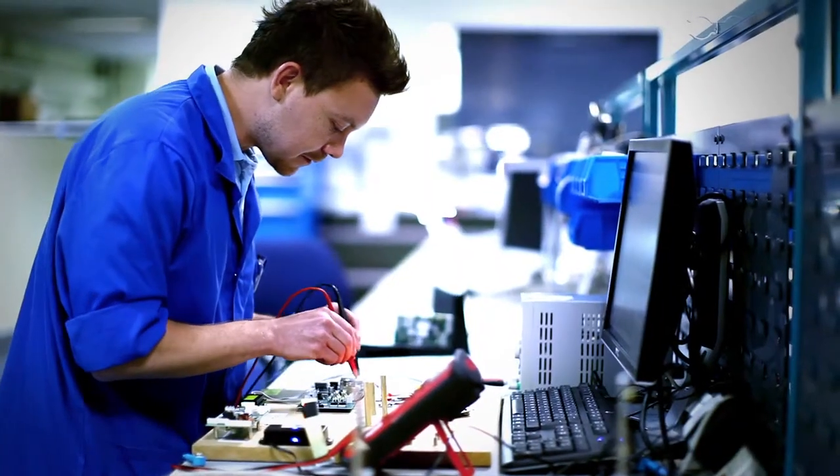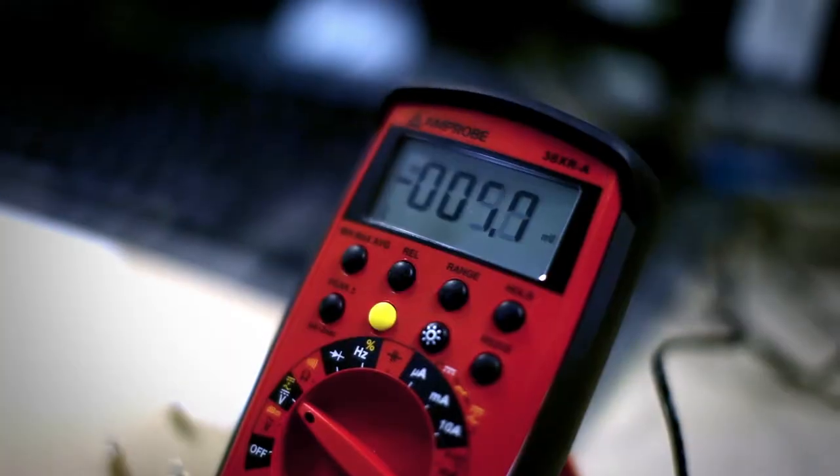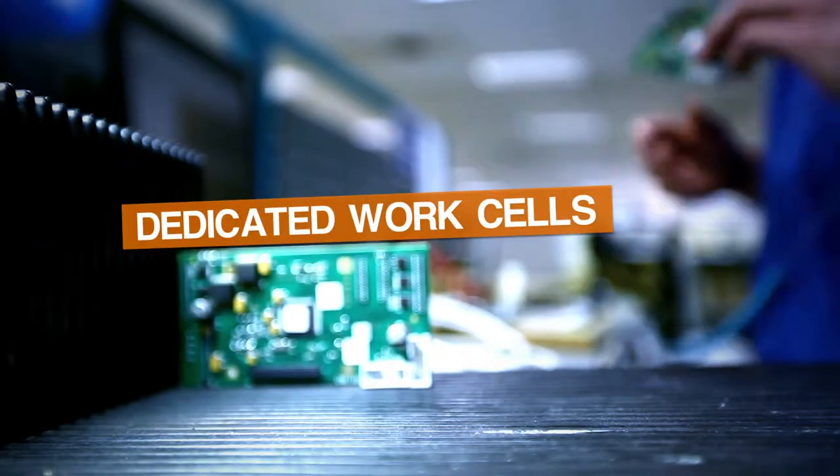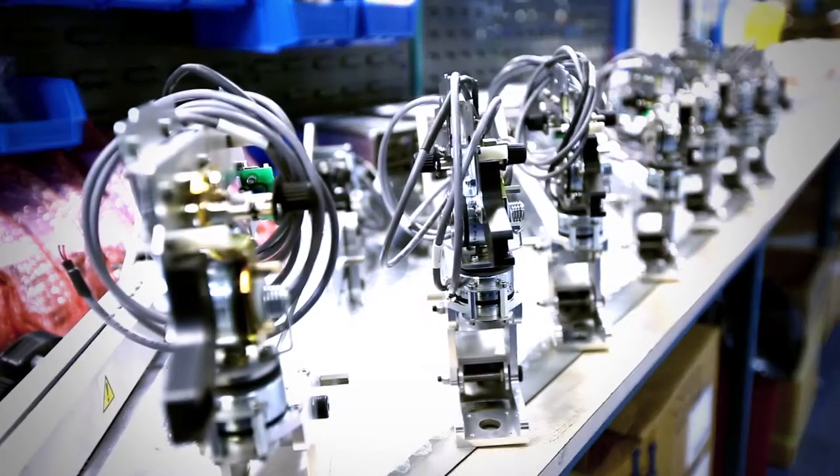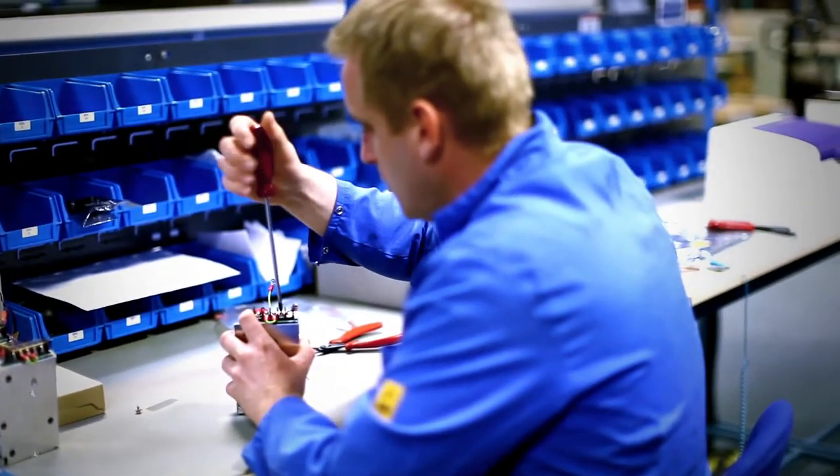Within our 3000 square meter facility, your product is assembled, tested, commissioned and packed in a dedicated quality controlled work cell. Your work cell is an extension of your company with project specific staff, processes and resources.